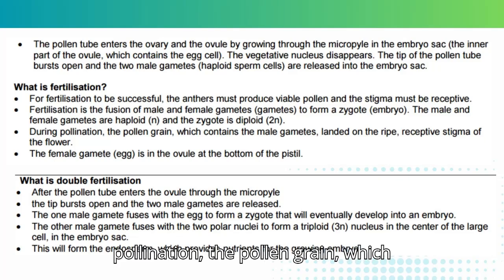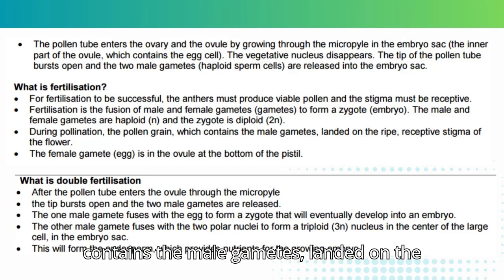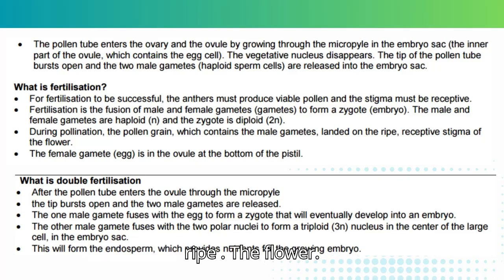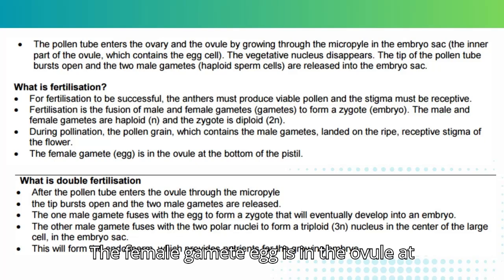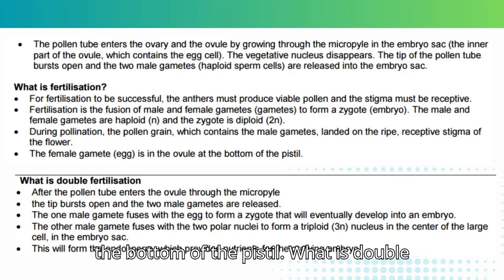During pollination, the pollen grain, which contains the male gametes, lands on the ripe, receptive stigma of the flower. The female gamete, or egg, is in the ovule at the bottom of the pistil.